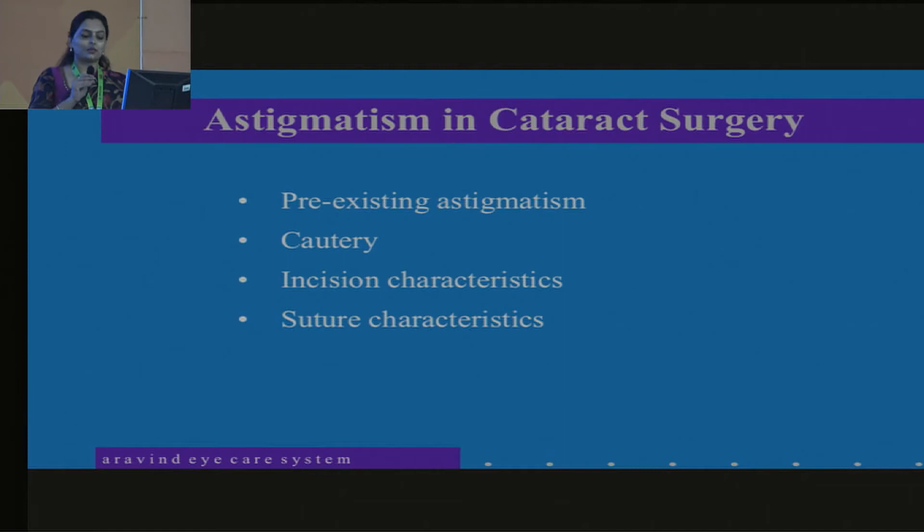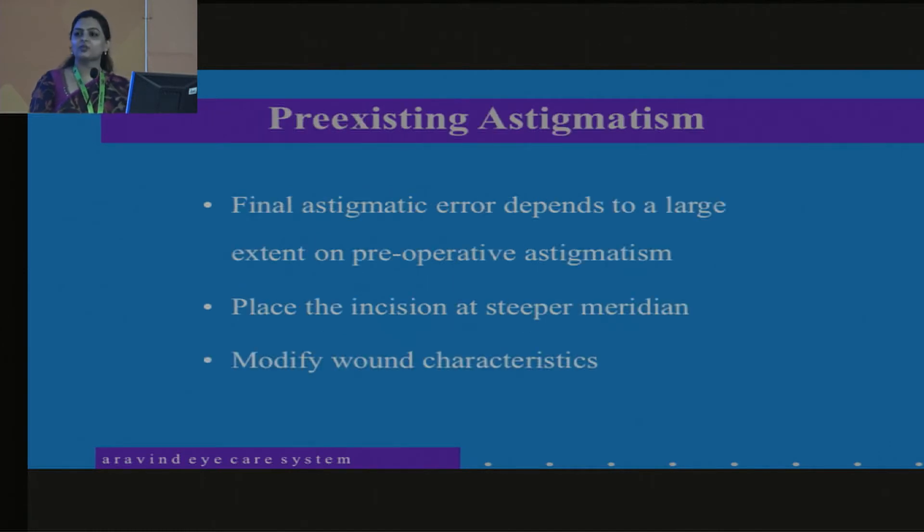So there are so many factors. One is the pre-existing astigmatism and what we as surgeons induce, that is by using cautery, by incision character, and the suture characteristics as well. So pre-existing astigmatism, how do we correct it? We actually have to have a good keratometry rating initially, and then we can place the incision at the steepest meridian.